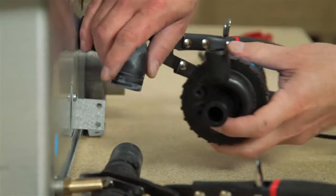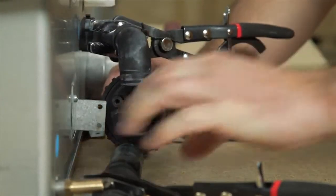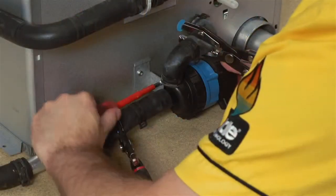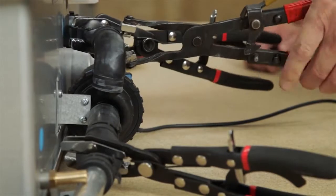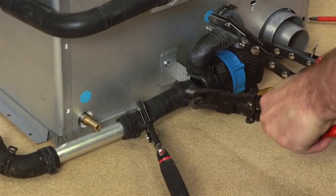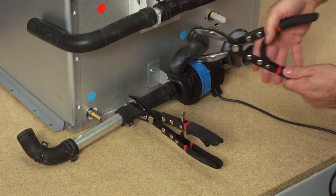Refit the replacement pump in a reverse procedure. Move the spring band clamps back into position. Remove the closing pliers.